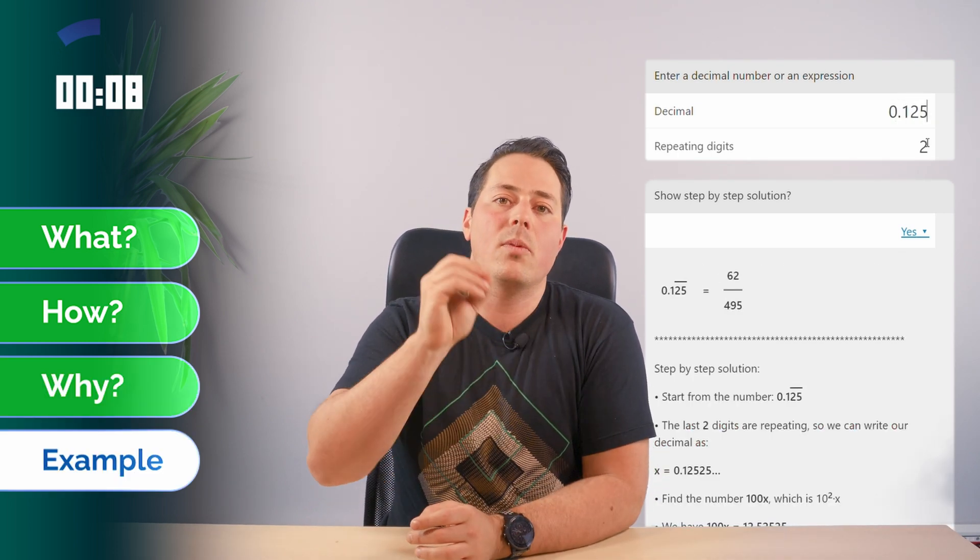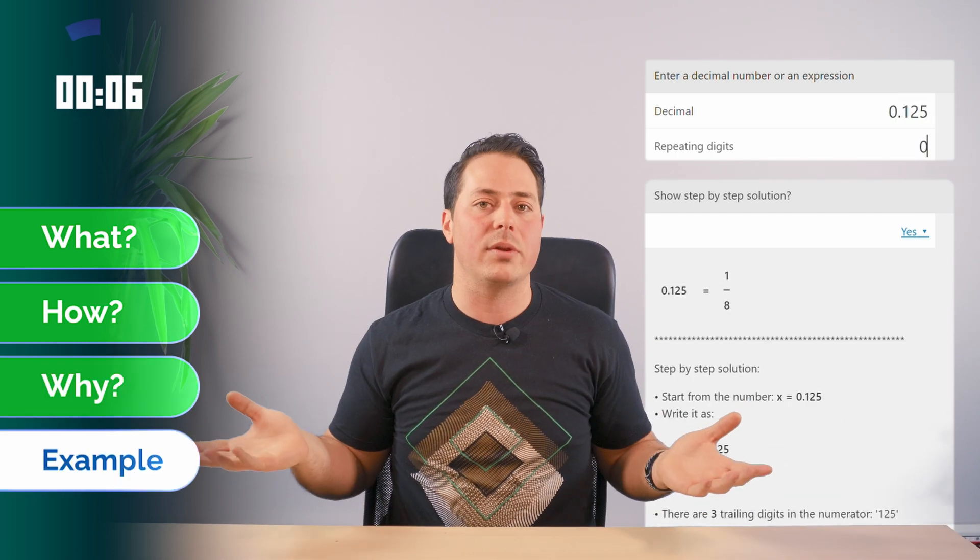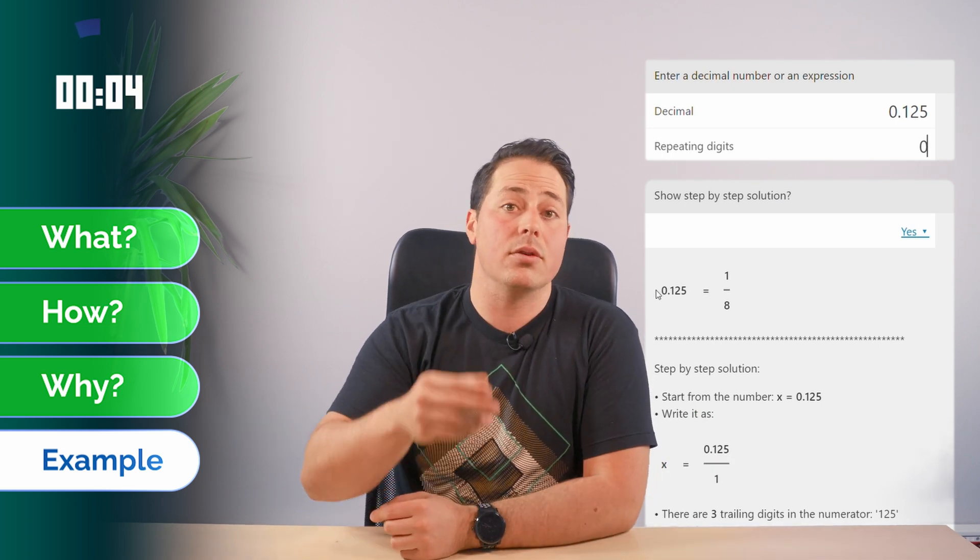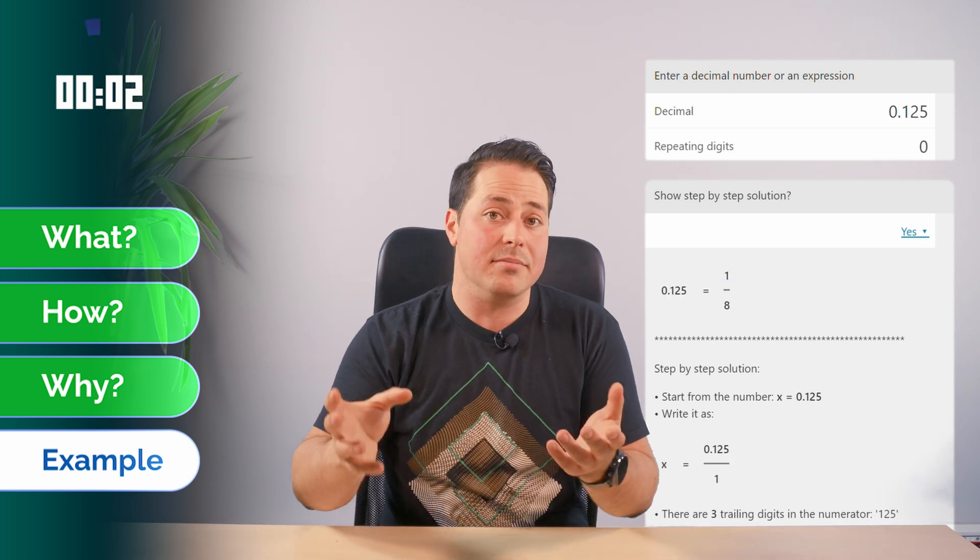If I tell you 0.125 of a cake, you don't know what that is. But if I tell you 1 eighth, you know to cut the cake in 8 pieces and get one of them.